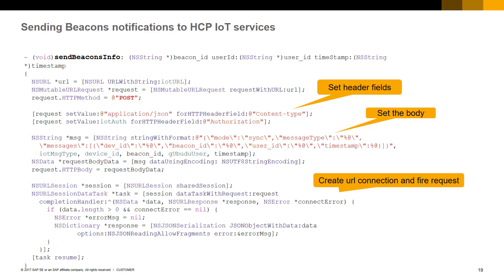Before sending, the information is formatted and includes the device ID of the mobile phone, the beacon ID, the user ID of the person registered in our shop and therefore in Business One, and the timestamp at the time the notification was received by the mobile phone.